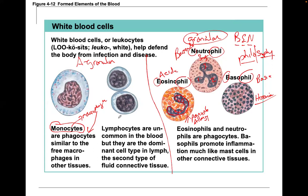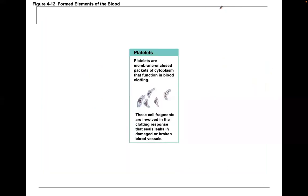Lymphocytes are typically seen with viral infections — if you're having a viral infection, your lymphocytes go up. If you're having a bacterial infection, your neutrophils go up. An easy way to remember: 'Never Bet Las Vegas' — Neutrophils are high with Bacterial infections, Lymphocytes are high with Viral infections.